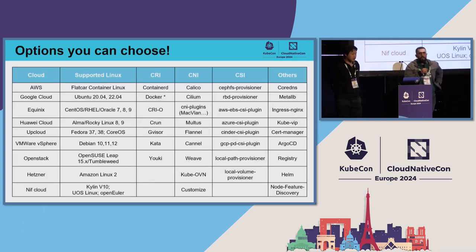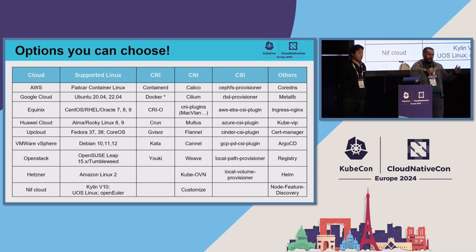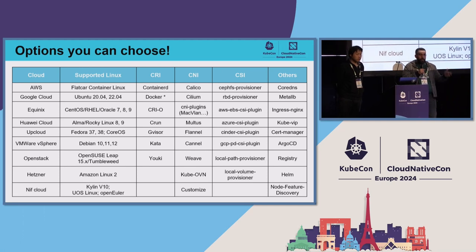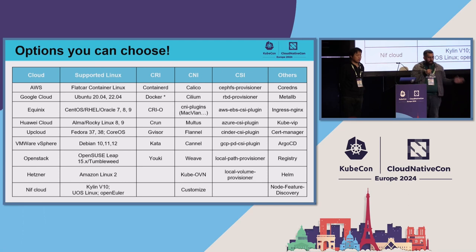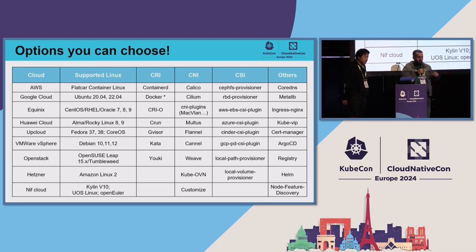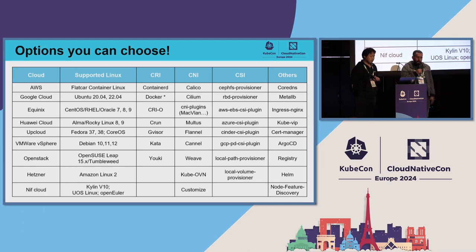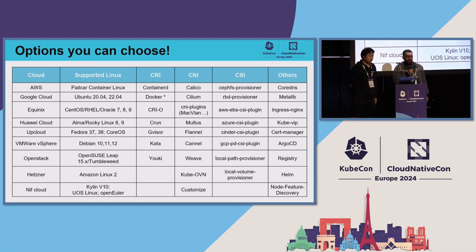You can use KubeSpray to deploy clusters on cloud providers like AWS, Google Cloud, Equinix, Huawei, and AppCloud. If you're hosting your own VMware vSphere environment, you can also do that. You can use OpenStack, Hetzner, and NetCloud. The supported operating systems include Ubuntu, CentOS, Alma, Fedora, openSUSE, Amazon Linux, and Kylan. For container runtime interface options we have ContainerD, Docker, CRI-O, Kata, and others. For CNI we have Calico, Cilium, plugins like MacVLAN, Multus, Flannel, Weave, Kernel, and KubeOVN.